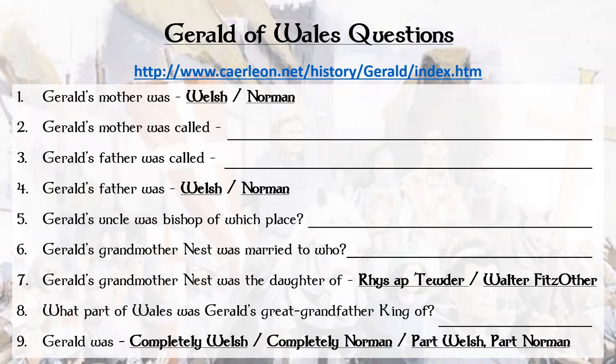Your first task is to visit the link at the top of this page, and read the first part called the introduction — the first four paragraphs up until the map. Then use the information from the previous slide and from that website to answer these nine questions. You can answer these nine questions in your book or on paper, or you can use the worksheet that was uploaded with the questions on. Pause this video and go and complete that task.